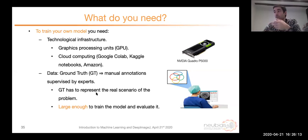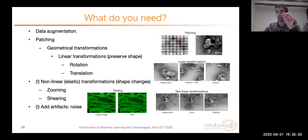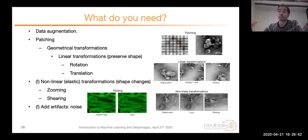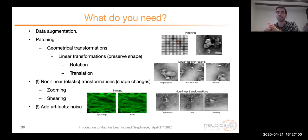You need data that has been manually annotated by experts and represents the real scenario of the problem. The data has to be large enough to train and evaluate the model. If you have only a few large images with annotations, you can use data augmentation — cropping images into patches and passing small versions to the network, or artificially creating new versions by geometrical transformations, rotations, translations, adding noise, etc. Of course, if you rotate the image, you also have to rotate the segmentation.